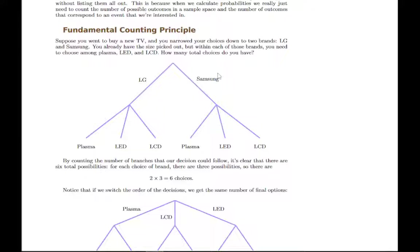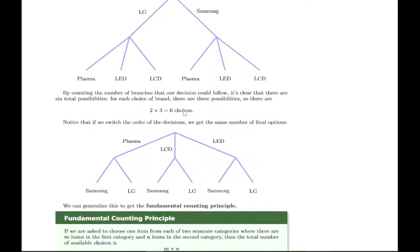So here we have two brands to choose from, and then once we've chosen a brand, we have three types to choose from. Notice this branching tree diagram tells us that there are a total of six possibilities for the kind of TV that we could get. And we can do it in either order.